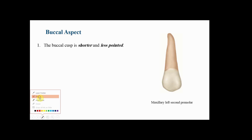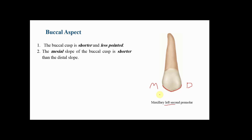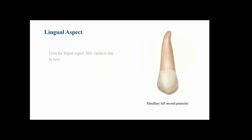The main differences between the two premolars include: the buccal cusp is shorter and less pointed in the second premolar; the mesial cusp slope is shorter than the distal cusp slope, similar to the maxillary canine and opposite to the maxillary first premolar; the buccal bridge of the crown is less prominent; and the crown and root near the cervical portion are thicker compared with the maxillary first premolar.